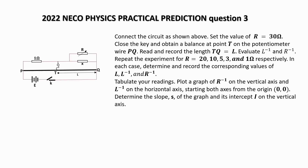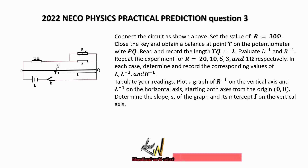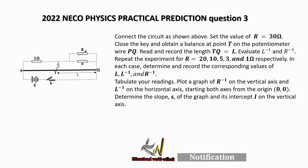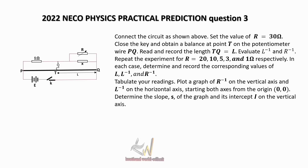This is my prediction for the electricity experiment. Connect the circuit as shown above, set the value R to 30 ohms, close the key and obtain a balance point T on the potentiometer wire PQ. Read and record the length TQ equal to L. Evaluate the inverse of L and the inverse of R. Repeat the experiment for different values of R, which are 20, 10, 5, 3, and 1 ohm respectively, and in each case determine the inverse of L and inverse of R.